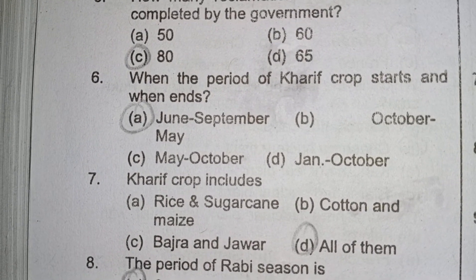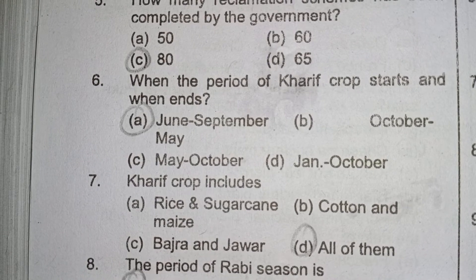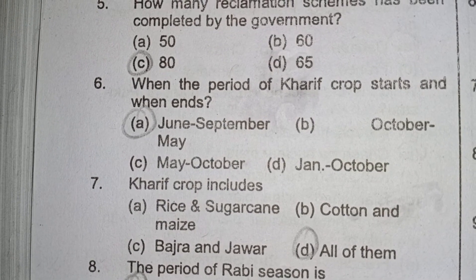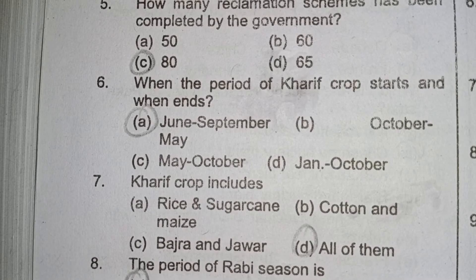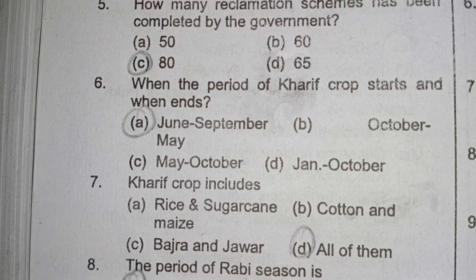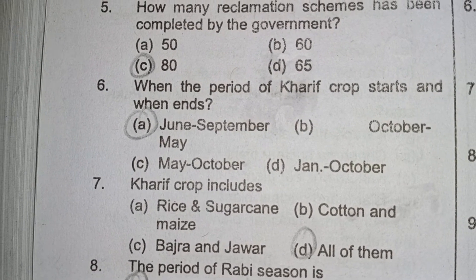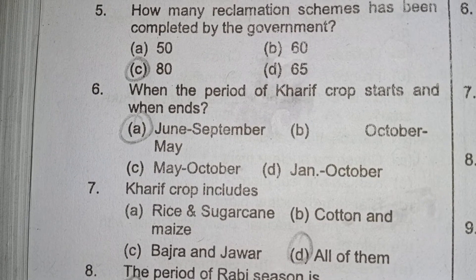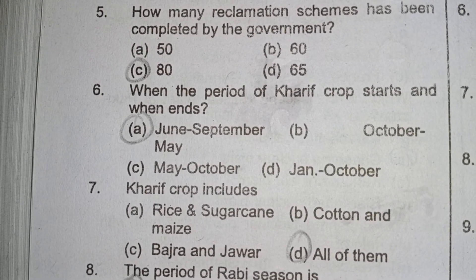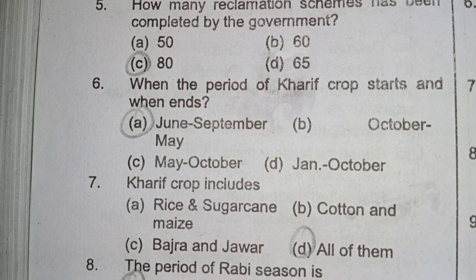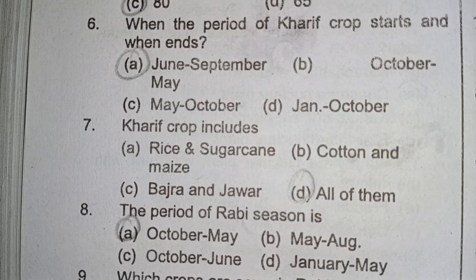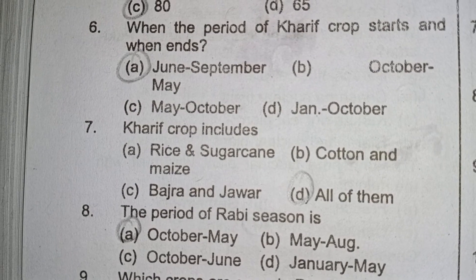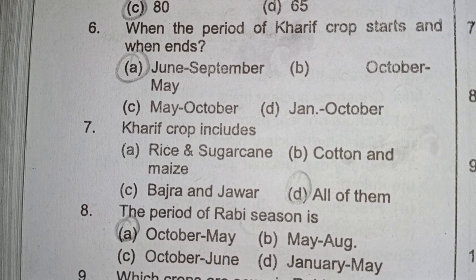The seventh question: Kharif crops include all of them. Option A is rice and sugarcane, option B is cotton and maize, option C is bajra and jowar — all of these are correct Kharif crops. The period of the Rabi season is October to May.